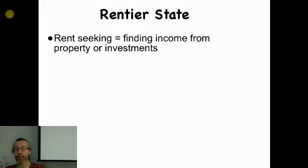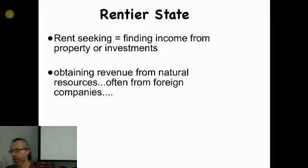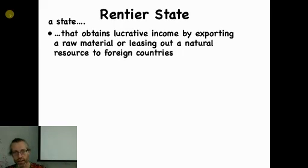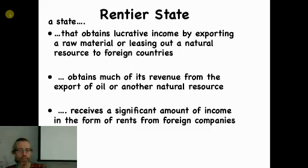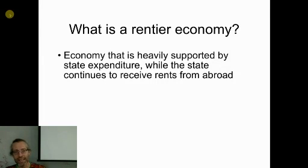The last thing to cover is a quick review of the rentier state concept. We saw this in Nigeria, and it's really important to have the definition down because we've got two key rentier states in this class - Iran and Nigeria - and really three if we throw in Russia. Rent seeking is the idea of getting your income from property or investments, obtaining revenue from natural resources. A rentier state is a country that obtains its income by exporting its raw materials or leasing those resources to foreign countries. Both Iran and Nigeria qualify - they obtain most of their revenue from oil.